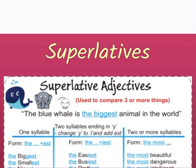The first superlative rule: for one syllable, add 'the' before the adjective and -est at the end — the biggest, the smallest, the largest. The second rule: for two syllables ending in Y, change Y to I and add -est — the easiest, the busiest, the prettiest. The third rule: for more than two syllables, use 'the most' before the adjective — for example: the most beautiful girl in the school, the most dangerous game in the world.